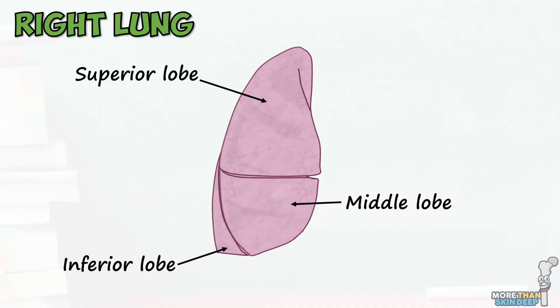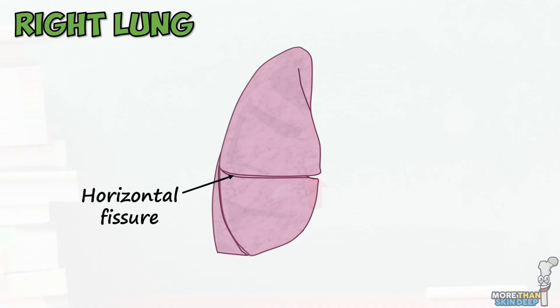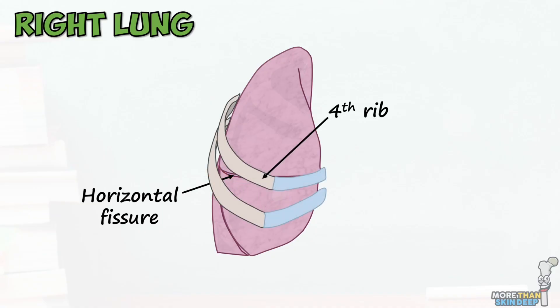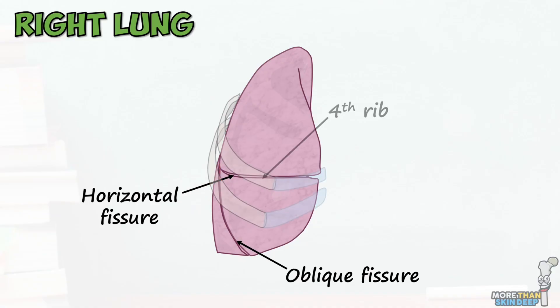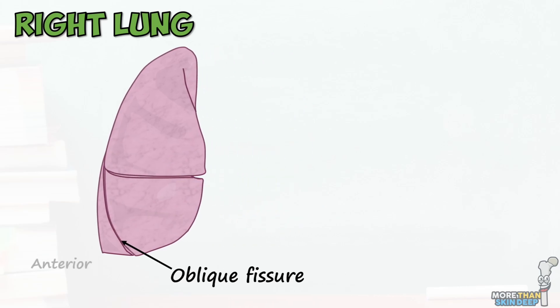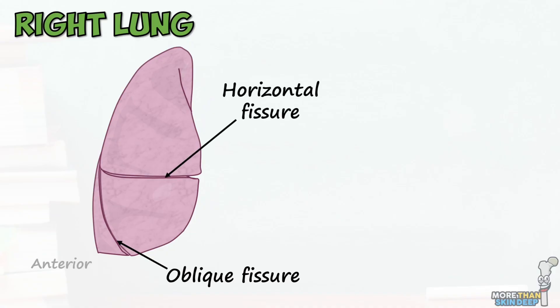We can see two large fissures in the right lung. The first is the horizontal fissure, which runs horizontally around the lung, roughly in line with the fourth rib and intercostal space. The second is the oblique fissure, which starts at the inferior border of the lung and passes superiorly and posteriorly to meet the horizontal fissure at the fourth intercostal space.